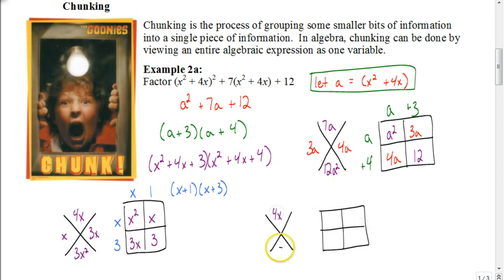So again we're going to use our xbox method here with our middle term being 4x. Multiply our first and last term we get 4x². Put the x² here and the 4 here. So we're looking for two numbers that multiply together to be 4x², same two numbers add together to be 4x. That would be 2x and 2x because 2x times 2x is 4x² and 2x plus 2x is 4x.